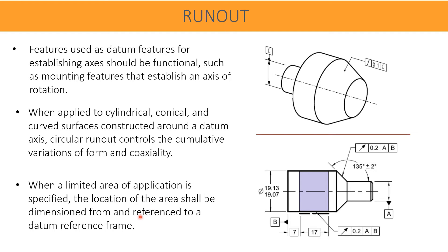In some cases, when a limited area of application is specified, the location of the area shall be dimensioned from the reference to a datum reference frame. This is the explanation given here. The runout is 0.2 with respect to A and B. Here two datums are shown. A is the small diameter, whereas B is the rear surface.